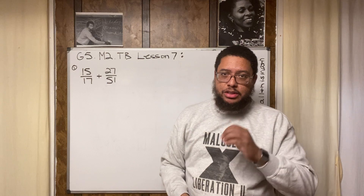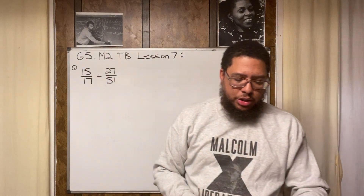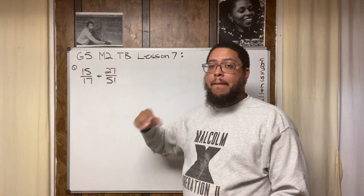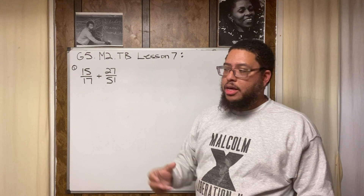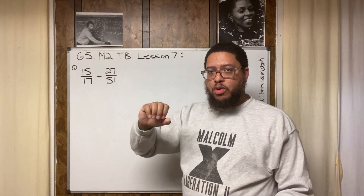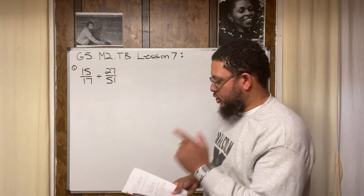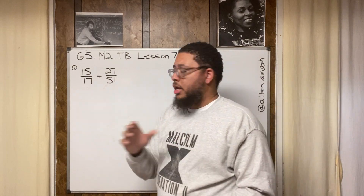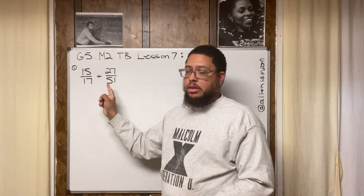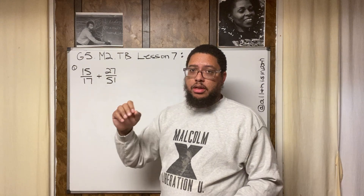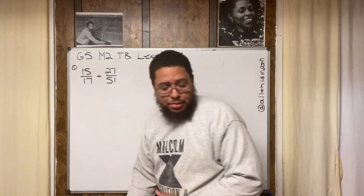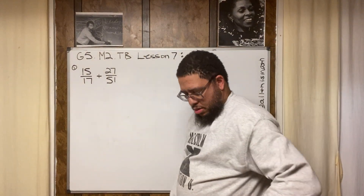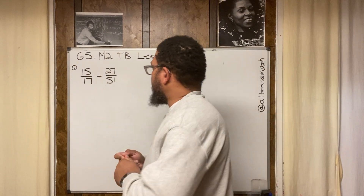Now we're going to find equivalent fractions — fractions that have different numbers in the numerator and denominator but have the same value. It might be the same amount, just broken up into more pieces or fewer pieces. First, look at your denominators. We already know 17 times 3 equals 51, so that's one way to create common denominators — meaning our denominators are the same.